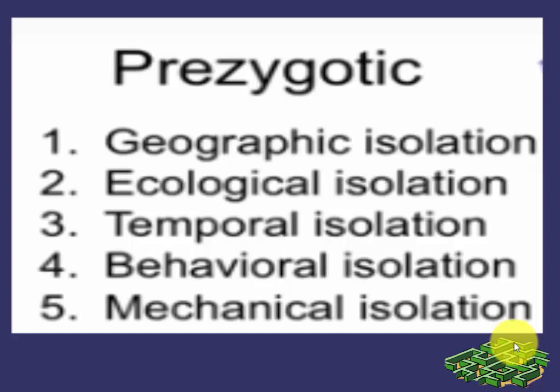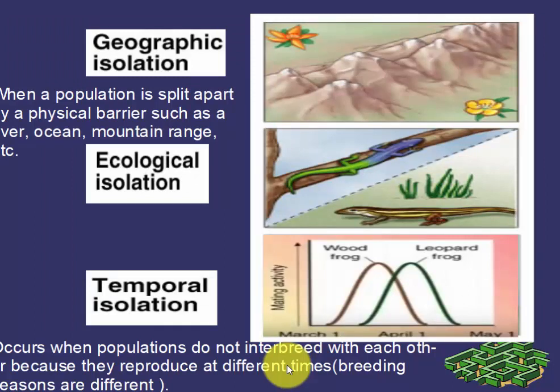Hello everyone, welcome back. Today's topic is the types of isolation. We have already discussed one question from CSNA in December 2017, which was based on temporal isolation. So let's discuss the types of isolation. Reproductive isolation is divided into pre-zygotic isolation and post-zygotic isolation. Today we are going to look at pre-zygotic isolation. The first type is geographic isolation, second is ecological isolation, third is temporal isolation, fourth is behavioral isolation, and fifth is mechanical isolation.